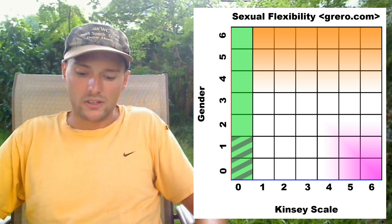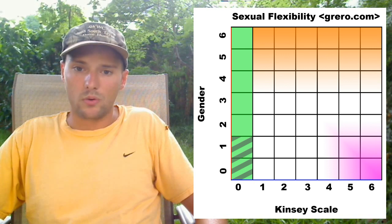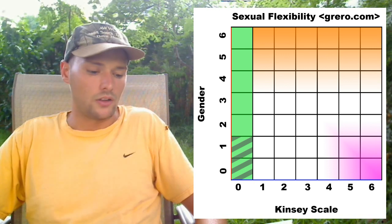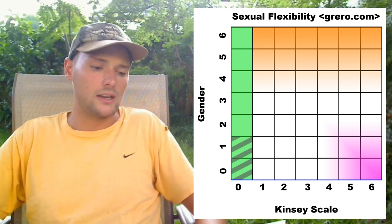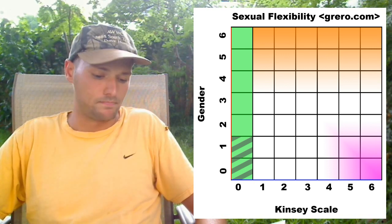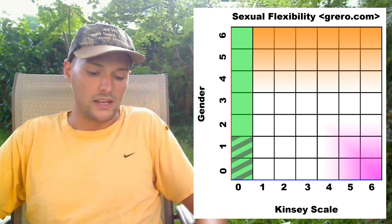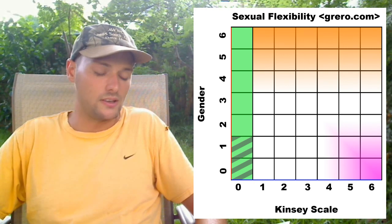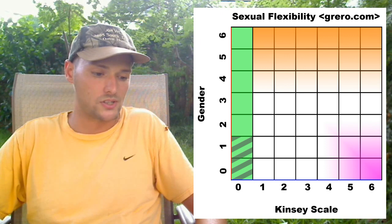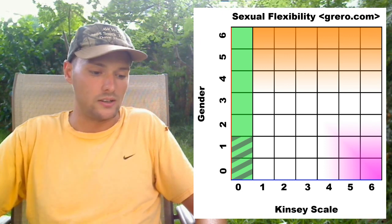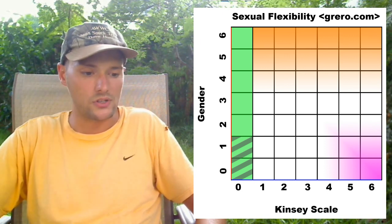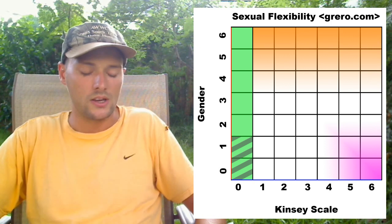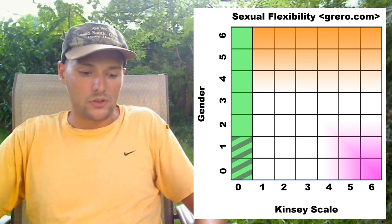So anyways, let's just describe what we're seeing with the chart here. The blue line would be the Kinsey scale — the x-axis. The red line, the vertical axis, would be the gender axis. So then we have the chart.